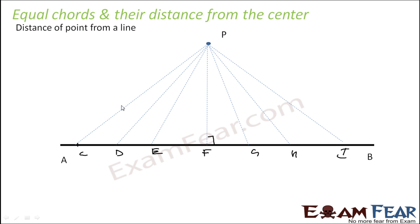If you see, PC will be different, PD will be different, PE will be different. So there are so many distances. What we consider is the shortest distance.